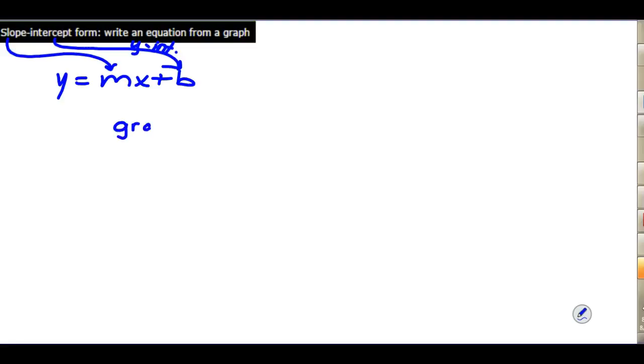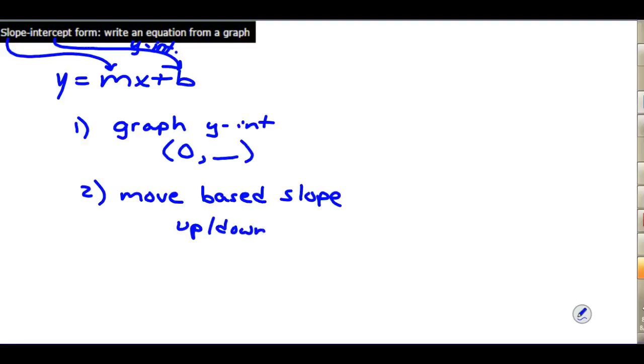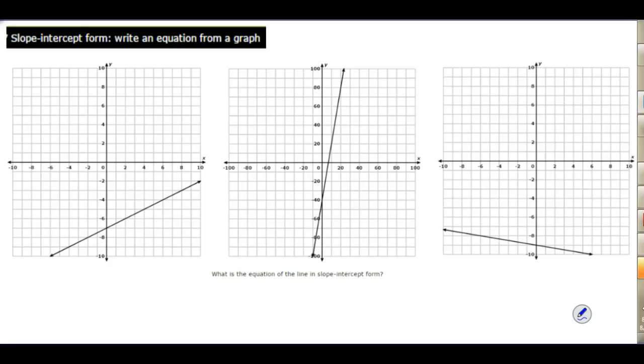You would first graph the y-intercept as a point on the coordinate plane of zero and whatever that y-intercept is, and then move based on the slope of up or down and left or right to graph another point on the line. Today, in this video, we'll be looking at lines that are already graphed and coming up with the equation.